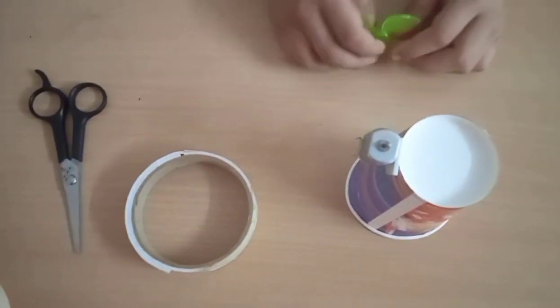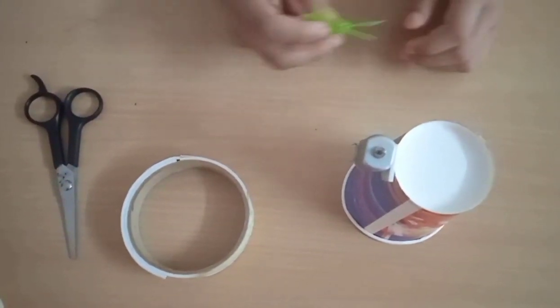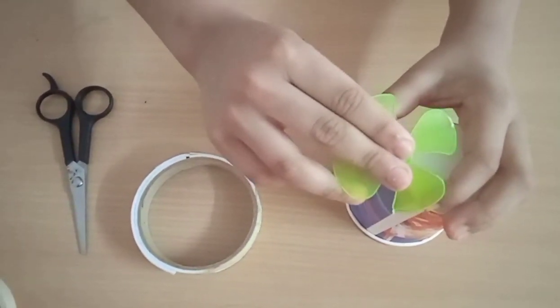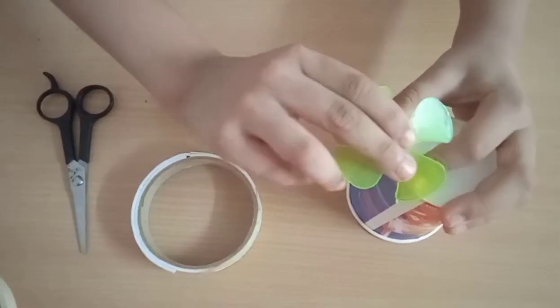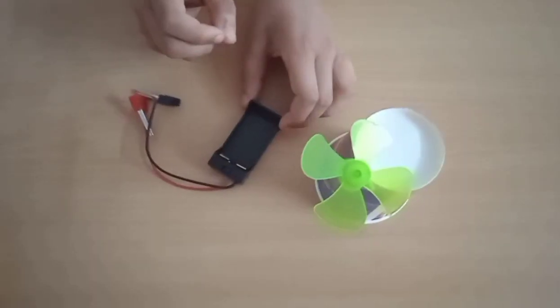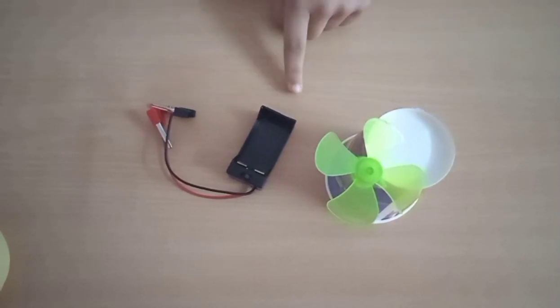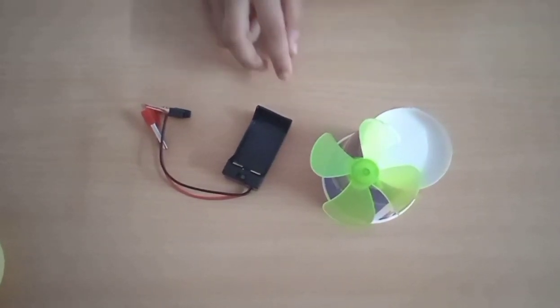Now, insert the fan into the DC motor. I have this battery holder with crocodile clip. I need to stick it on the opposite side of the glass.